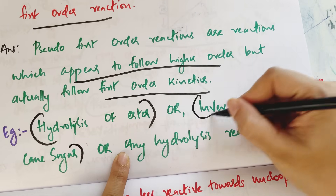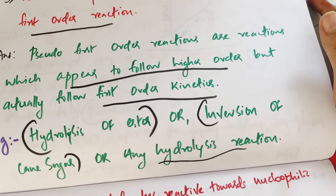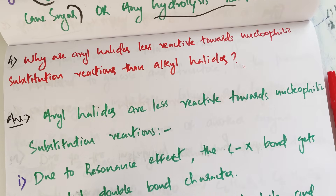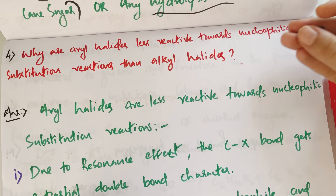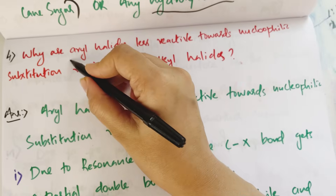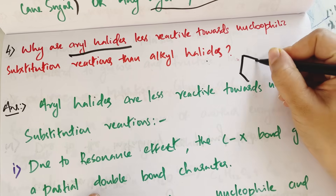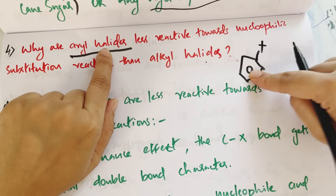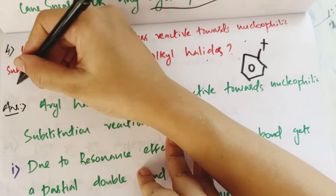Here is a hydrolysis reaction which is a pseudo-first-order reaction. Let's talk about haloalkanes and haloarenes. Why are aryl halides — benzene ring with halide X — less reactive towards nucleophilic substitution reactions?